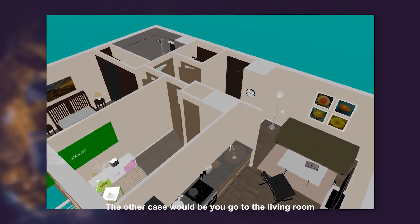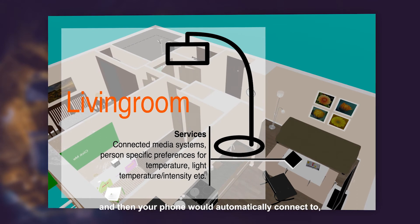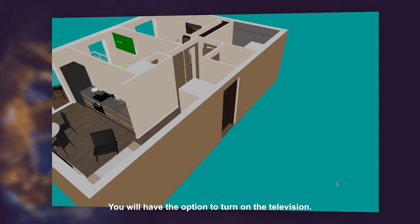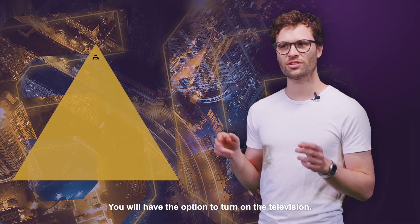The other case would be you go to the living room, and then your phone would automatically connect to, for example, the speakers there. You will have the option to turn on the television.